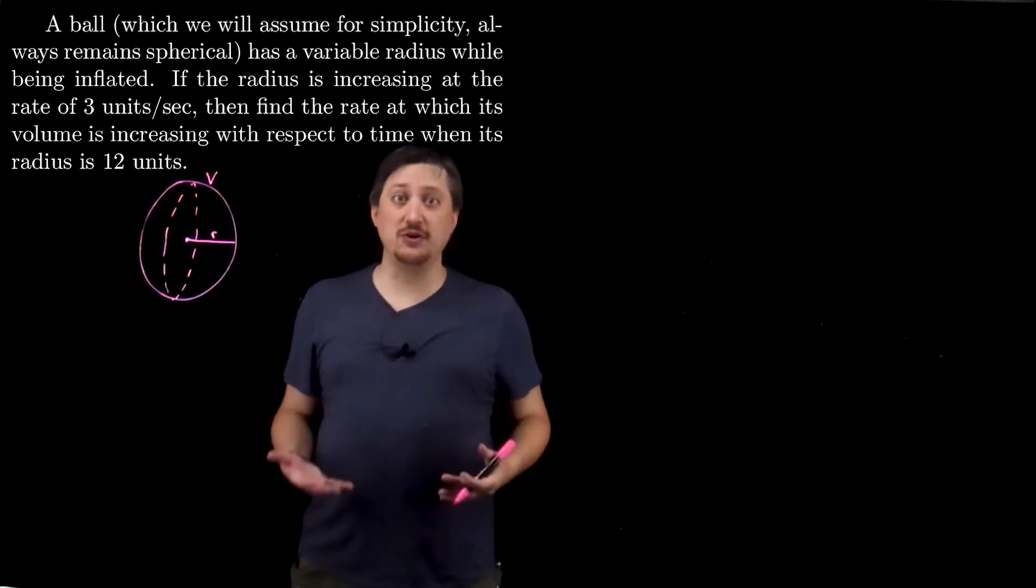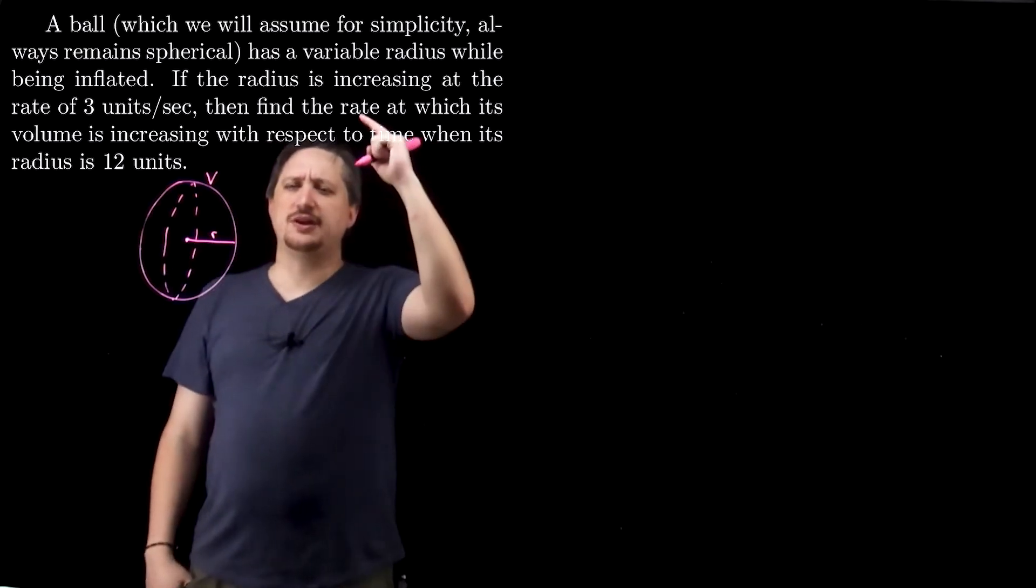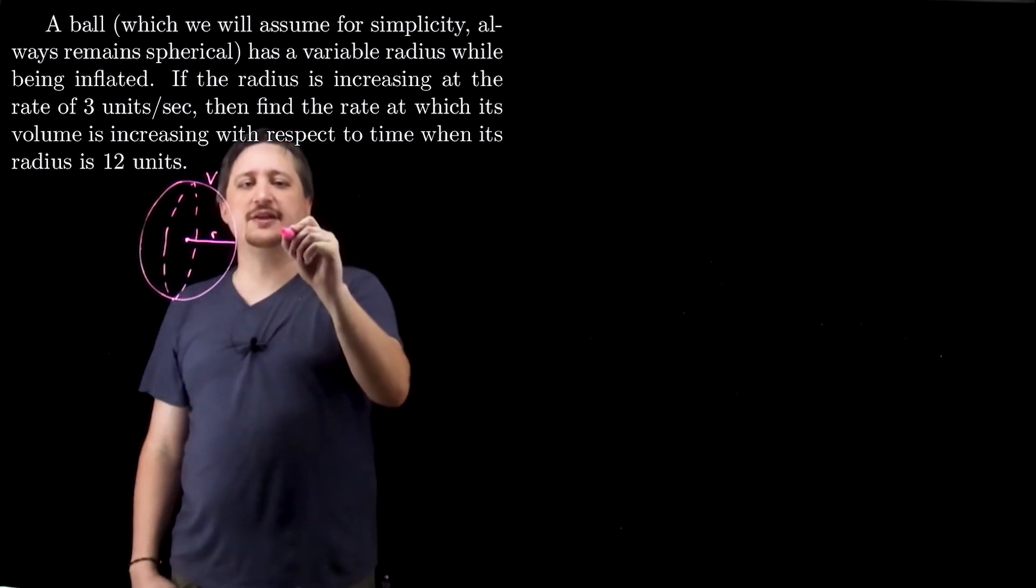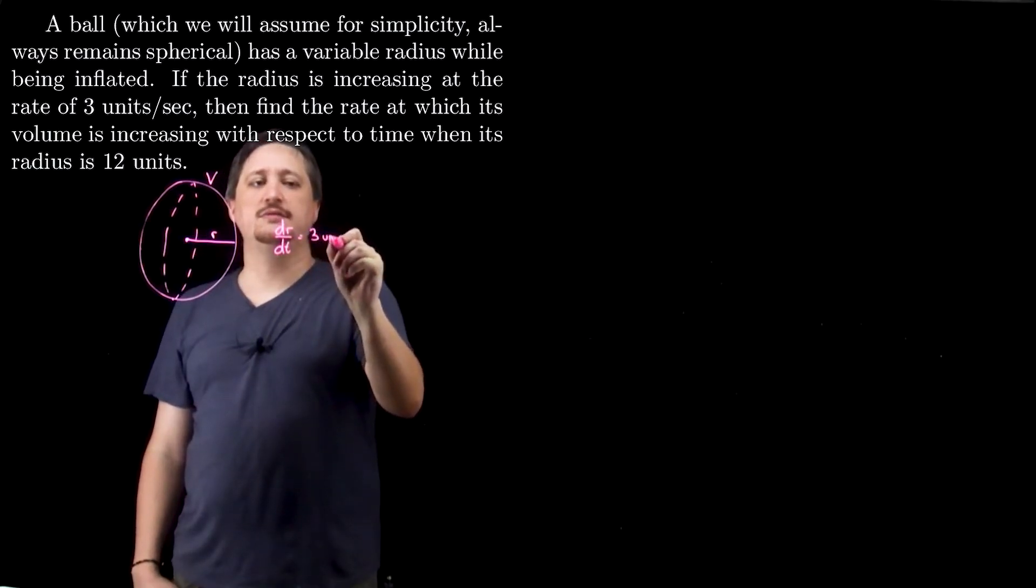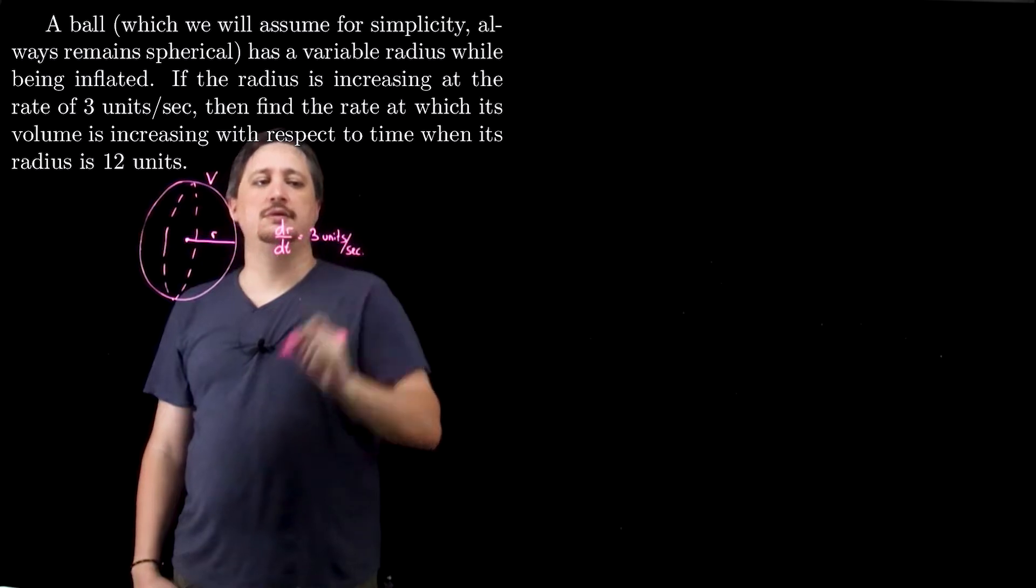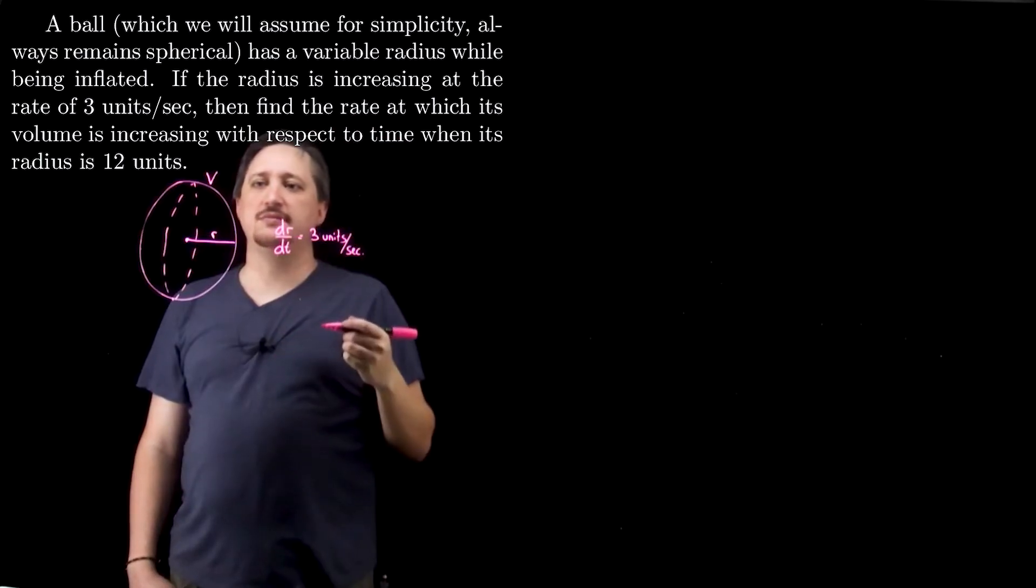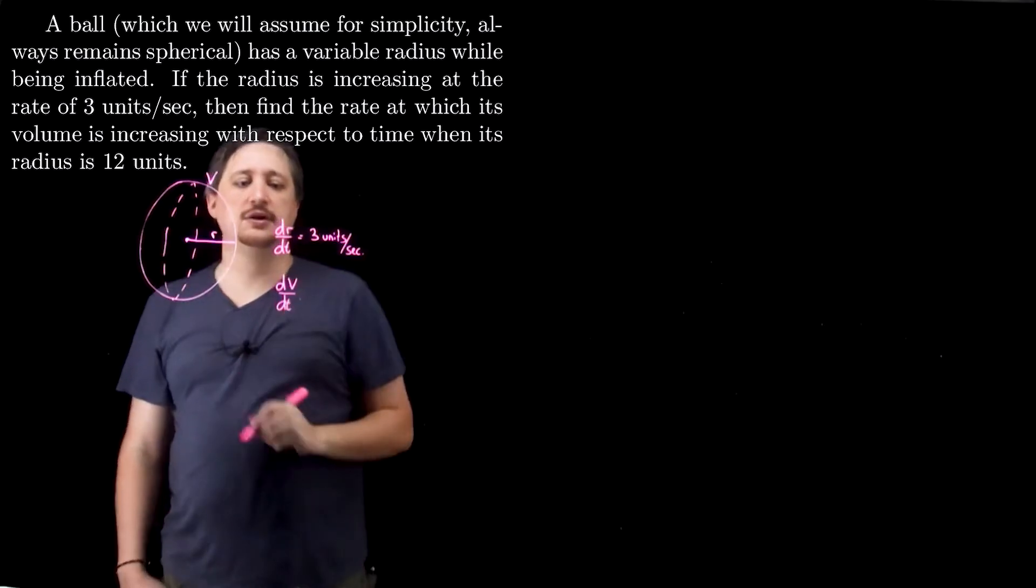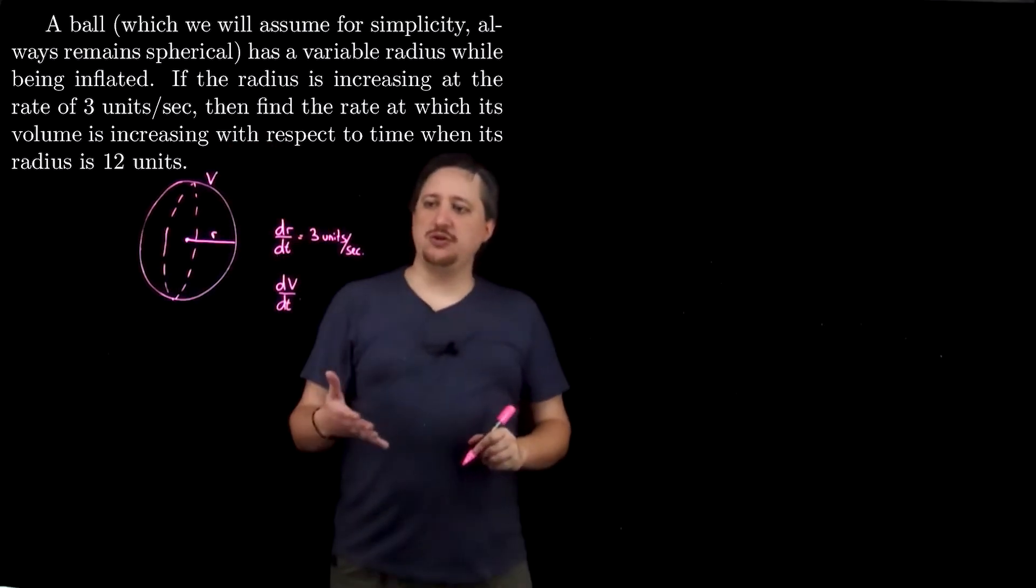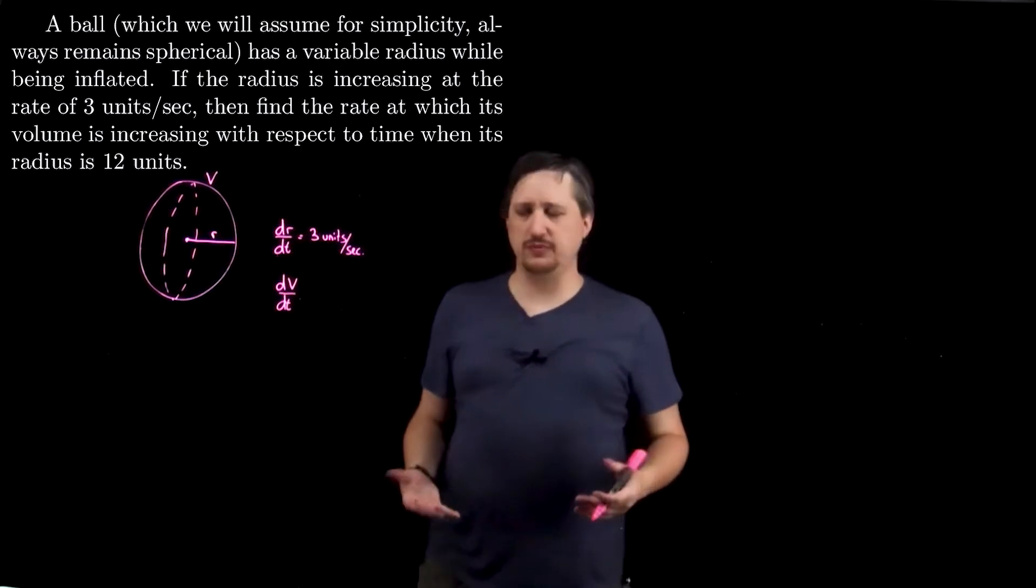Now, I want to know something about the volume of this thing given a change in radius. So if my radius is R, the radius is increasing at the rate of three units per second, so that means my dr/dt, my change in radius over time, is three units per second. And it wants to know what is the volume increasing to with respect to time when the radius is 12 units large.